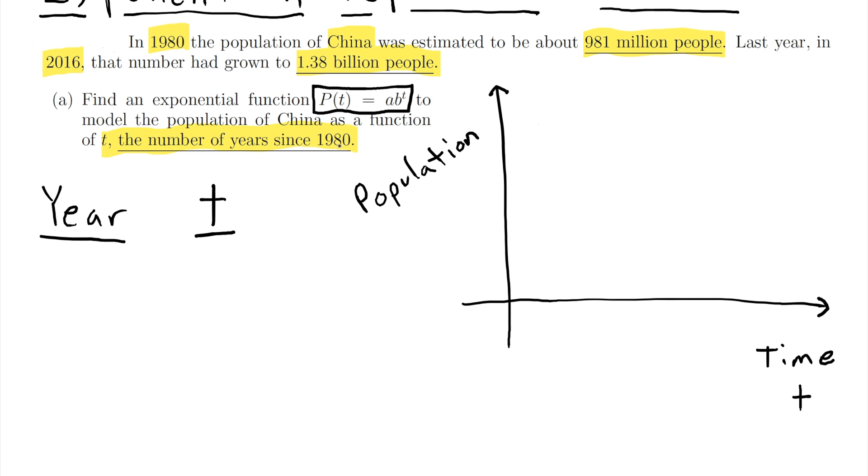So since t is the number of years since 1980, in the year 1980 that's going to be zero. And then the next date that is important in this problem is 2016. And how many years is that from 1980? Well that's 36 years later.